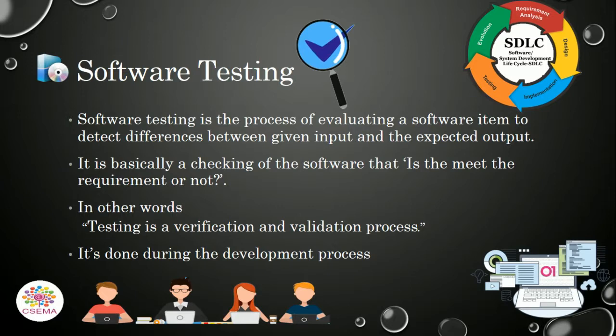So we say that software testing is basically checking that the software meets the requirements. In other words, testing is a process of verification and validation. Verification is the manual process done by software experts and teams, while validation is the process done by computer systems to validate the user requirements. Software testing is done during the development process and is performed at every phase of development from start to end.